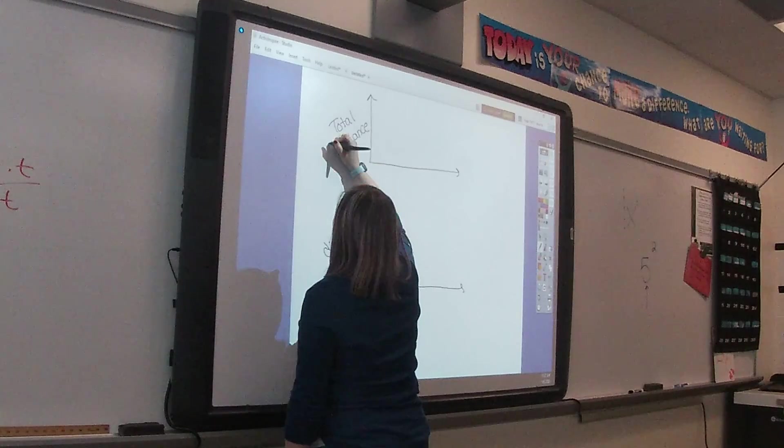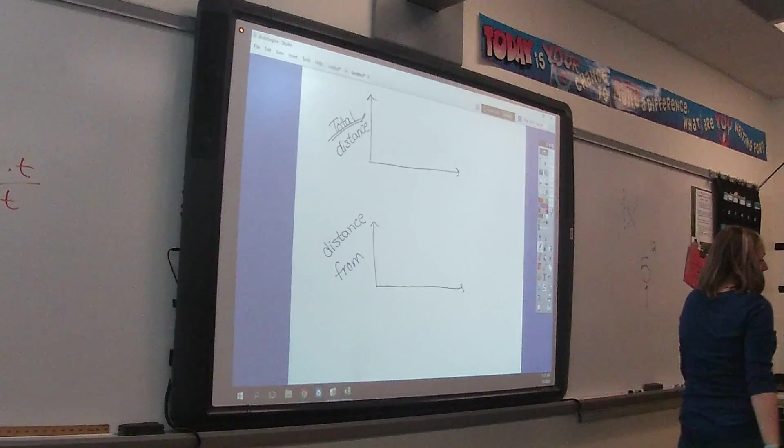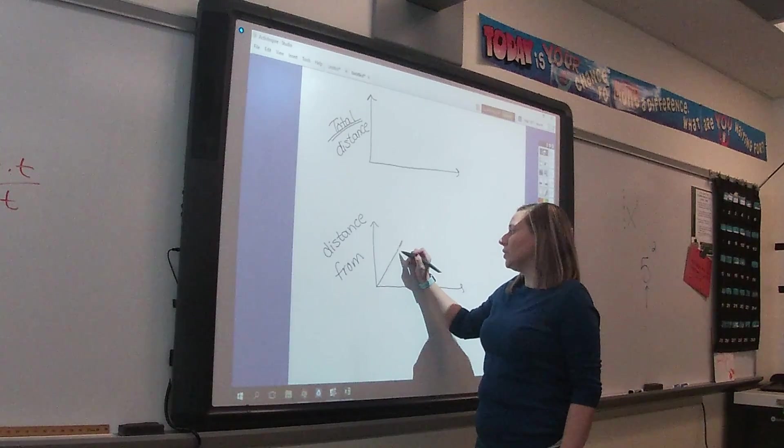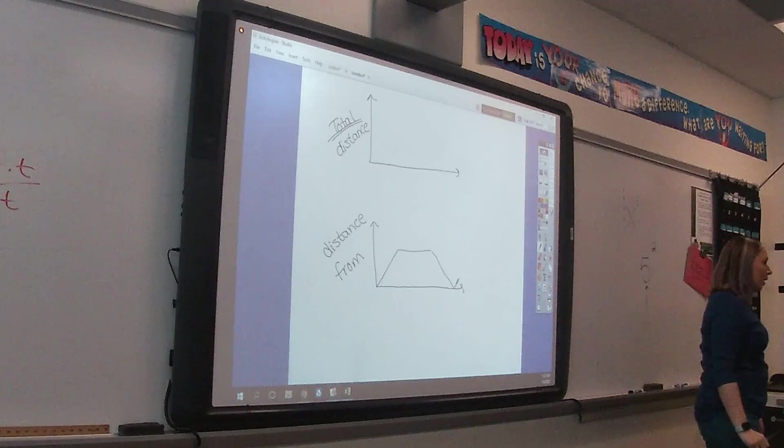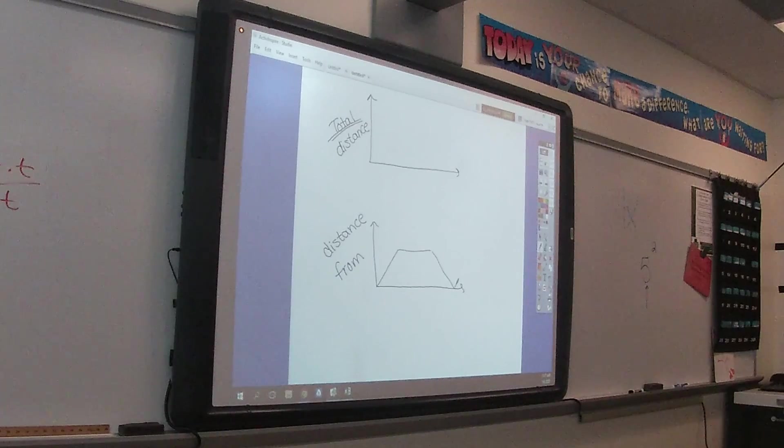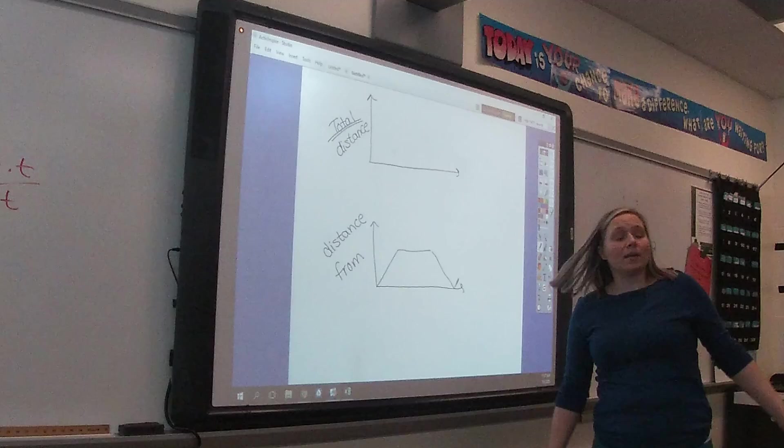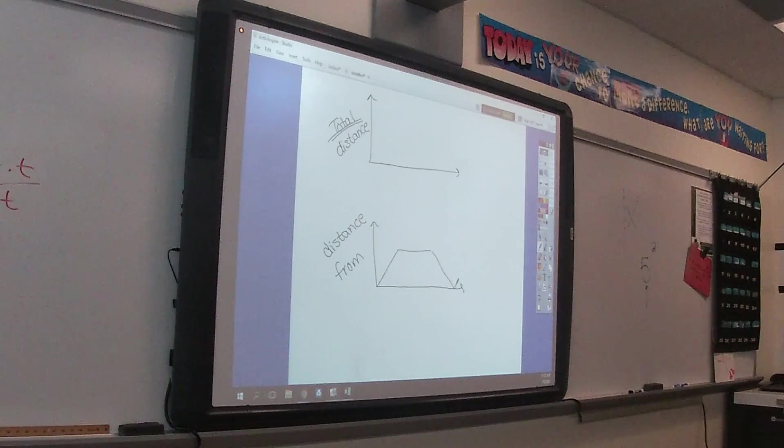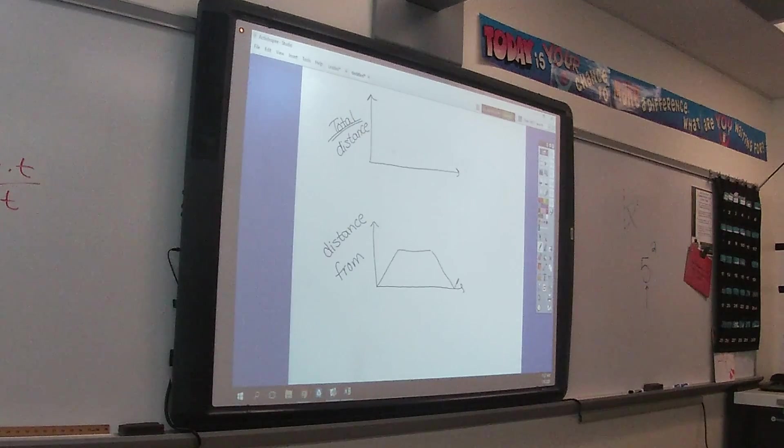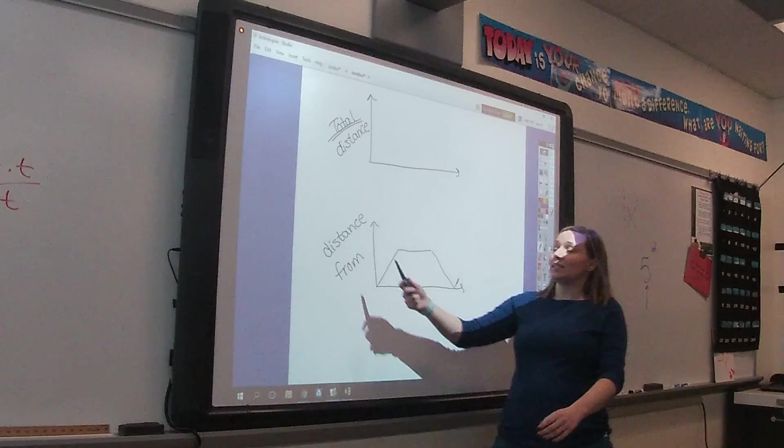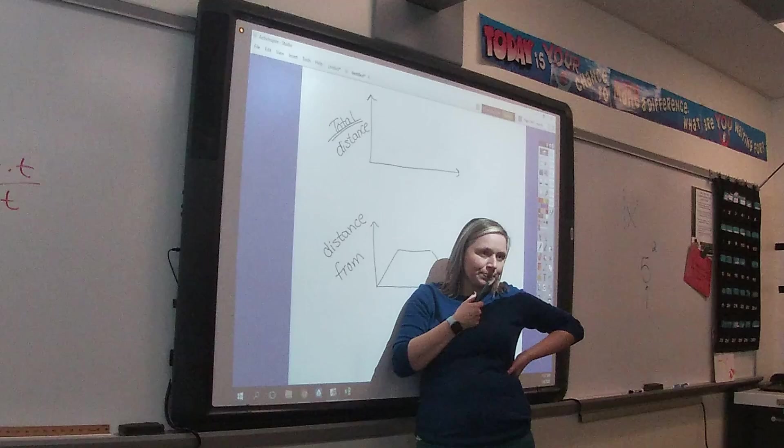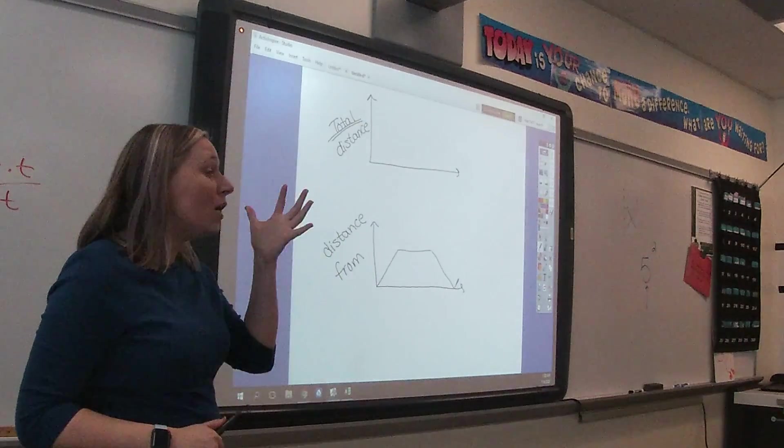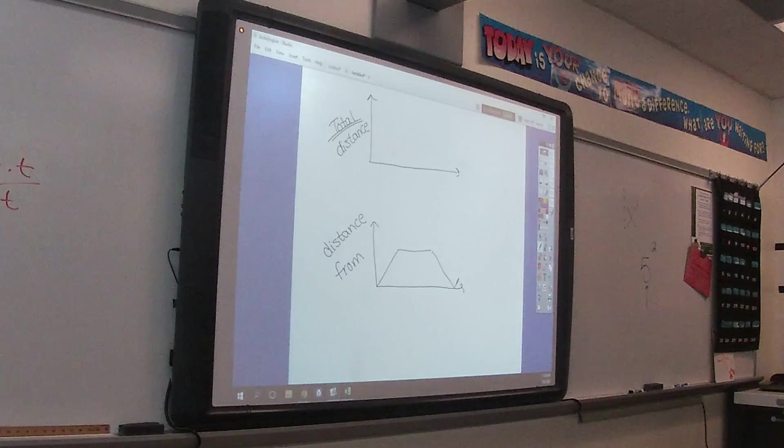We also have this funny word that we can throw in, which is our total distance versus our distance from. So if we stick to that graph we had before, you don't need to recopy it because you already have it. If this is the graph we had before, we said that I was walking away from the door, increasing my distance from the door, then I'm keeping a constant distance from the door, and then I'm decreasing my distance from the door. Agree? That's that bottom graph. Now, let's say I do that exact same thing, but now I'm no longer going to talk about my distance from the door, but I'm changing my label to my total distance walked. So exact same motion. I'm going to do the exact same thing, but I've now changed my Y label.